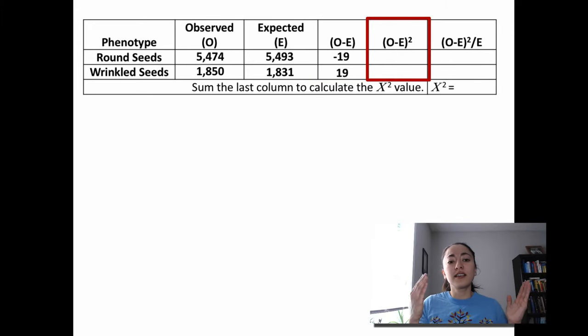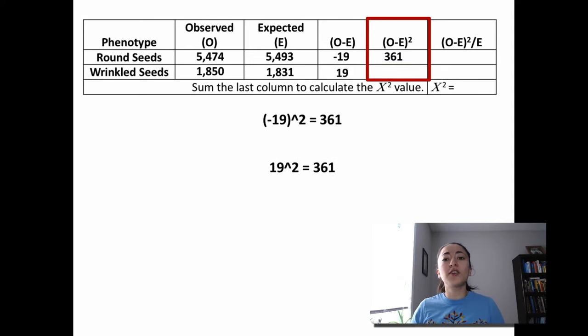Then you take negative 19 and you square that and that gives you 361. Remember when you square a negative number, it gives you a positive number. So by squaring it, we're pretty much just getting rid of any negatives present. You will also take the 19 from the second row, square that and that equals 361.